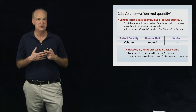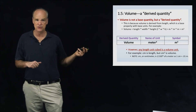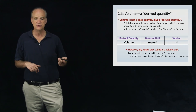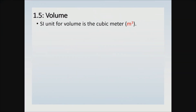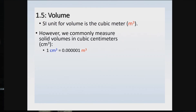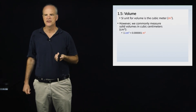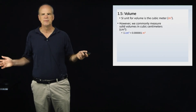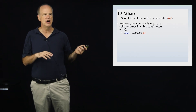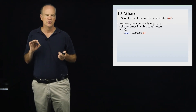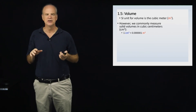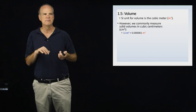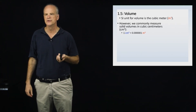When we take a unit like centimeters and cube it, we get centimeters cubed — a volume unit. You can take any length unit and cube it to obtain a volume unit. The SI unit for volume is the cubic meter, but in the lab we commonly measure solid volumes in cubic centimeters because a cubic meter is an extremely large volume. A centimeter cubed is only about one-millionth of a meter cubed.